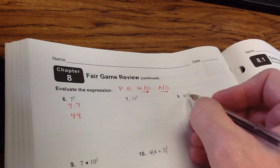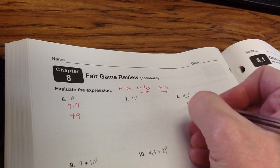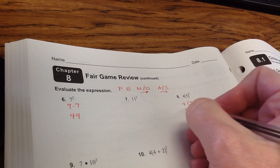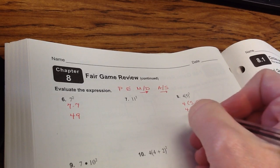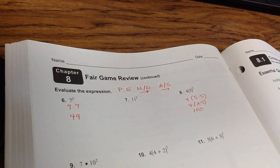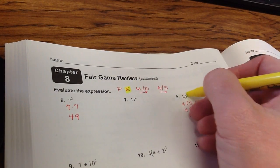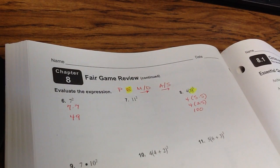But here, 4 times the quantity of 5 squared. 5 squared is 5 times 5. You've got to do that first. So this is going to be 4 times 25, which is 100. Remember, this has to be done before you multiply. And then you're good.